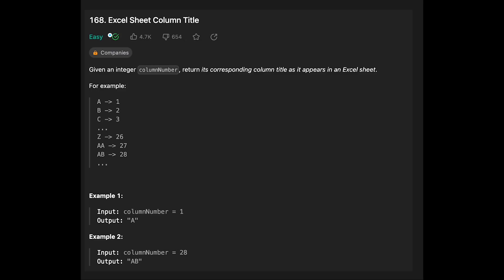Hey everyone, today we are going to solve the LeetCode question Excel Sheet Column Title. You are given an integer column number and return its corresponding column title as it appears in your Excel sheet. For example, A is 1, B is 2, C is 3, and Z is 26.